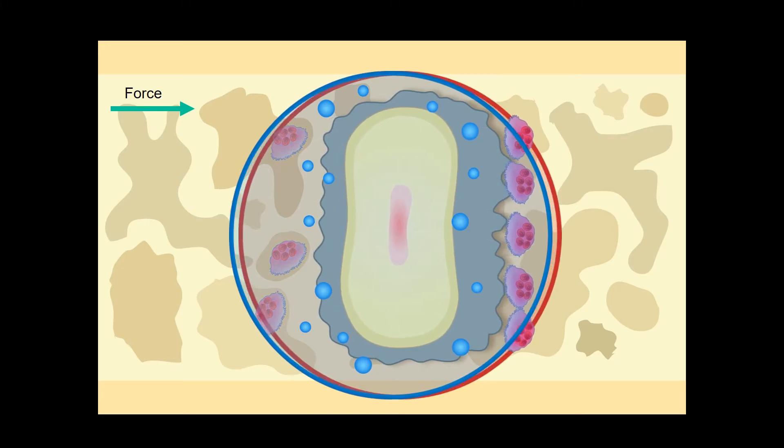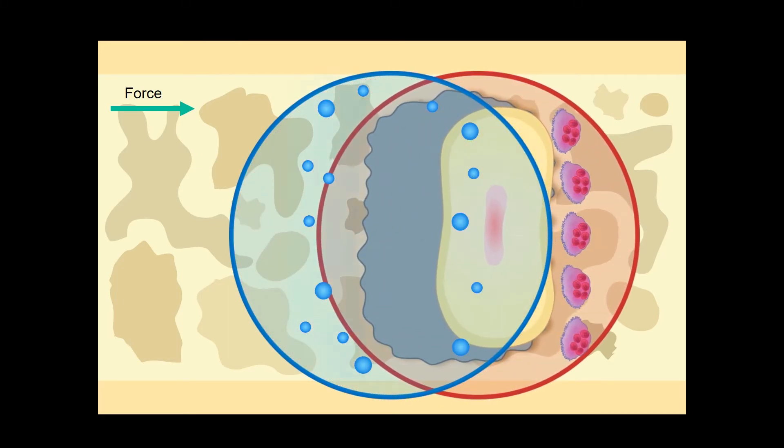However, as tooth movement in response to orthodontic forces continues, the red cycles move forward while the blue cycle stays behind. Now, if you look at a section of orthodontic tooth movement not at a single early time point but catch it later on, you will think that compression caused bone resorption and tension caused bone formation.